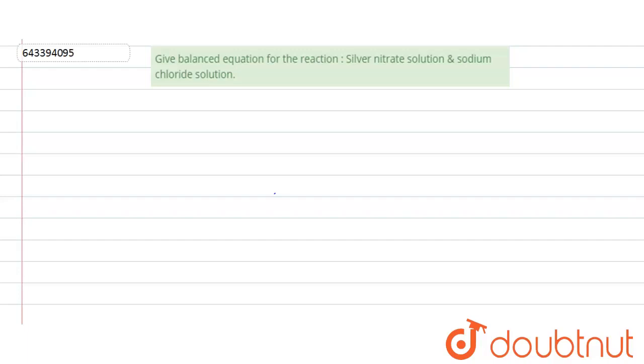So formula of silver nitrate is AgNO3, this is silver nitrate, sodium chloride is NaCl and product will be getting AgCl, silver chloride and NaNO3, sodium nitrate.